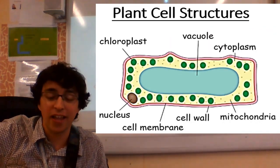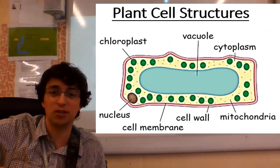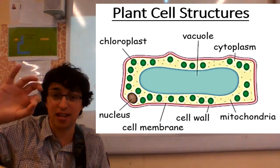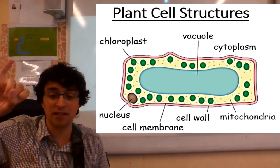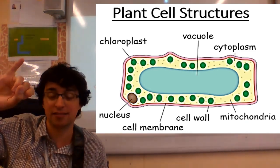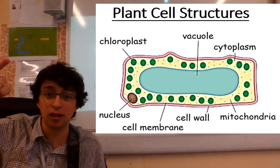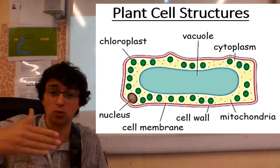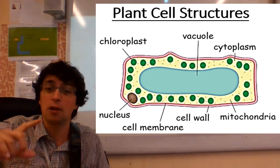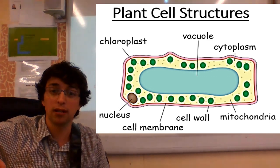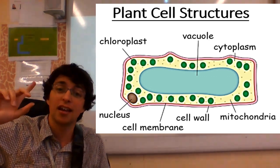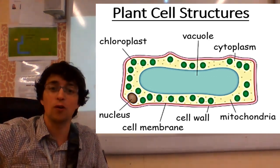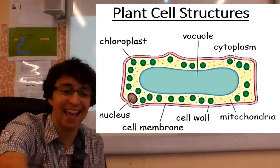Yes, they do. So those are the plant-cell structures. Remembering, they've got the three things that animal cells have: cytoplasm, where the chemical reactions occur; nucleus, which contains the DNA and controls the cell; and the cell membrane that controls what enters and leaves. But they've also got a cell wall, a vacuole, and chloroplasts for photosynthesis.